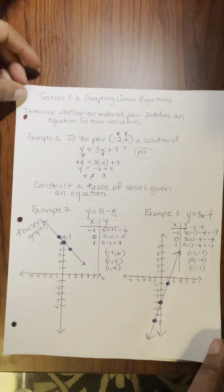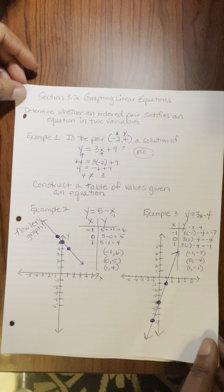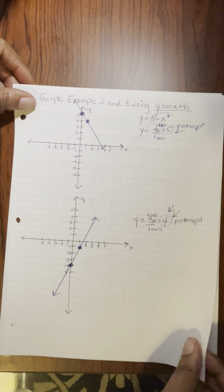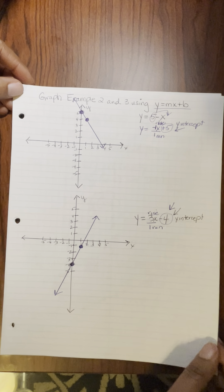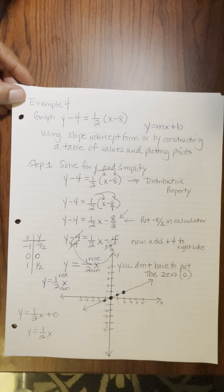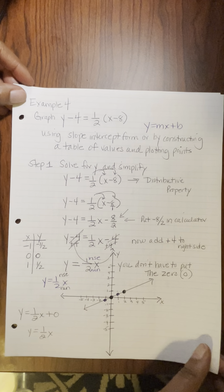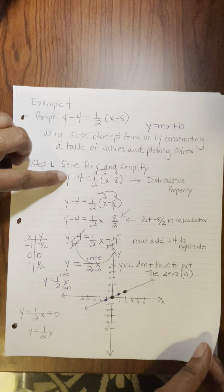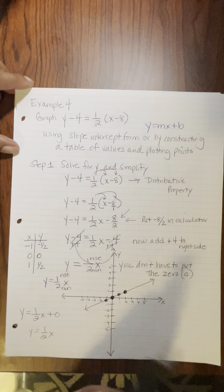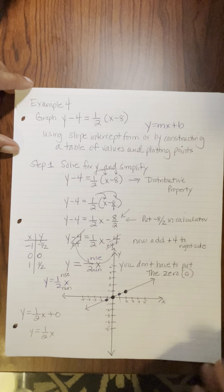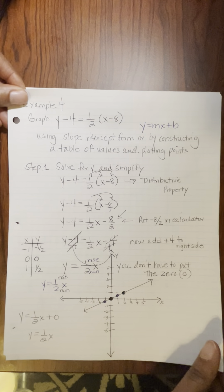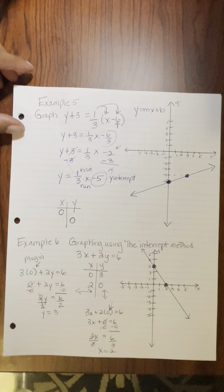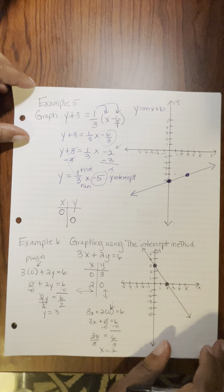Just some notes in case you need to go over those one more time. This was on using the slope-intercept form of a line — examples 2 and 3. This is example 4 we did in part 1, where we did the distributive property, and also the table, just in case you needed to see the table and what y equals mx plus b looks like. Any form that you want to do is fine with me, as long as you learn.